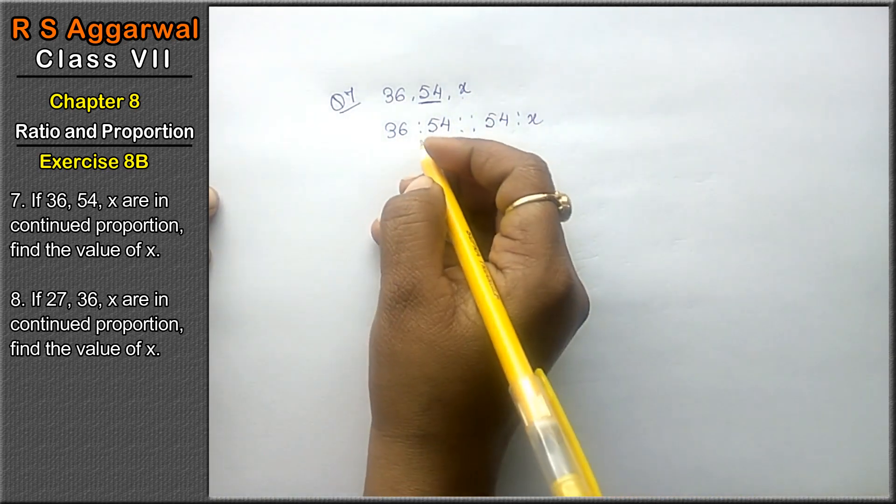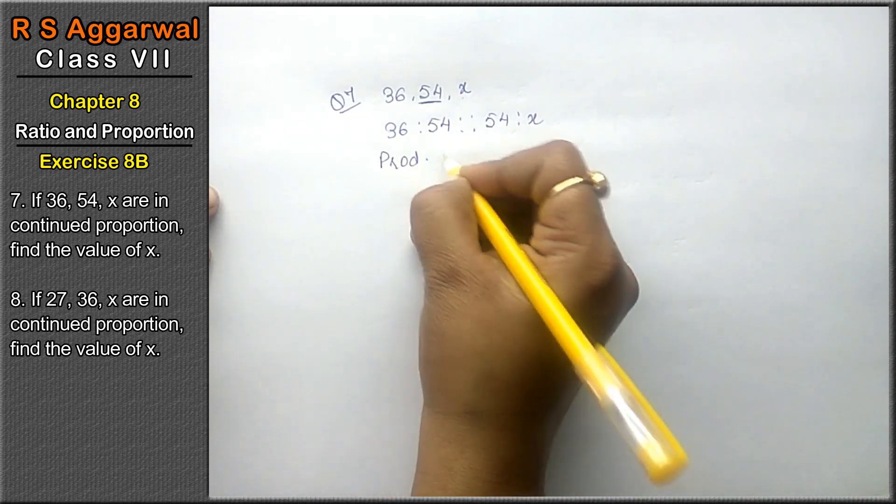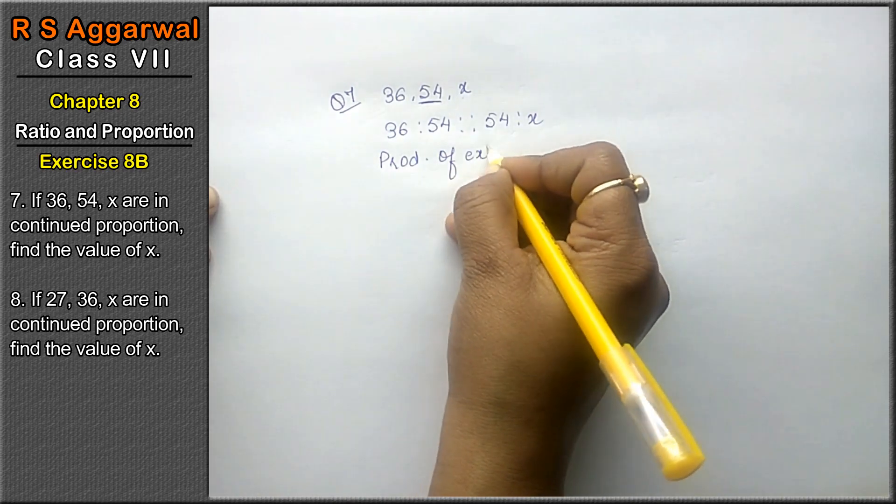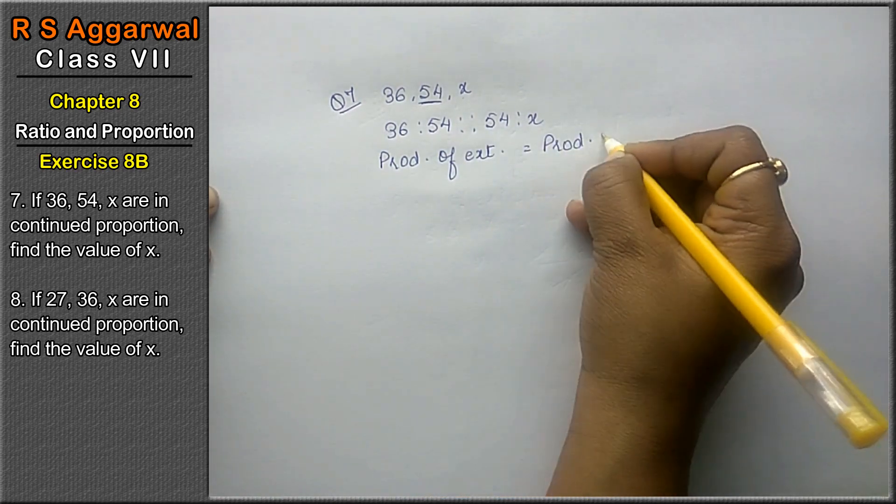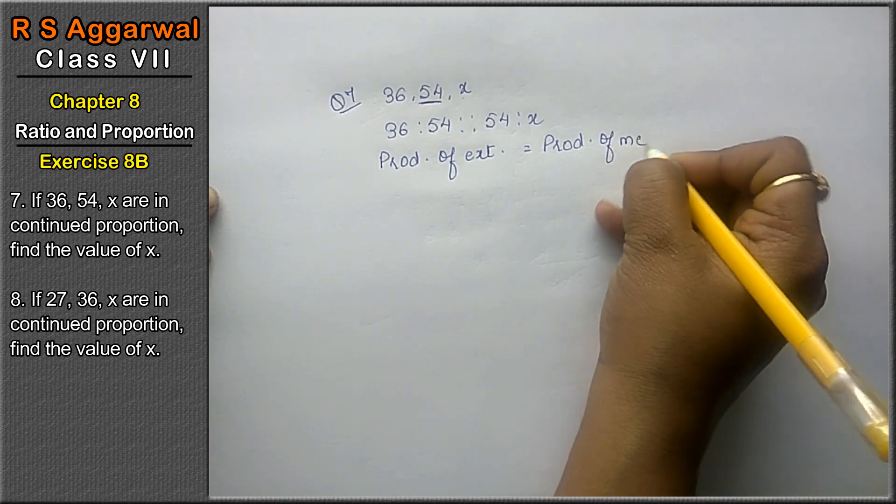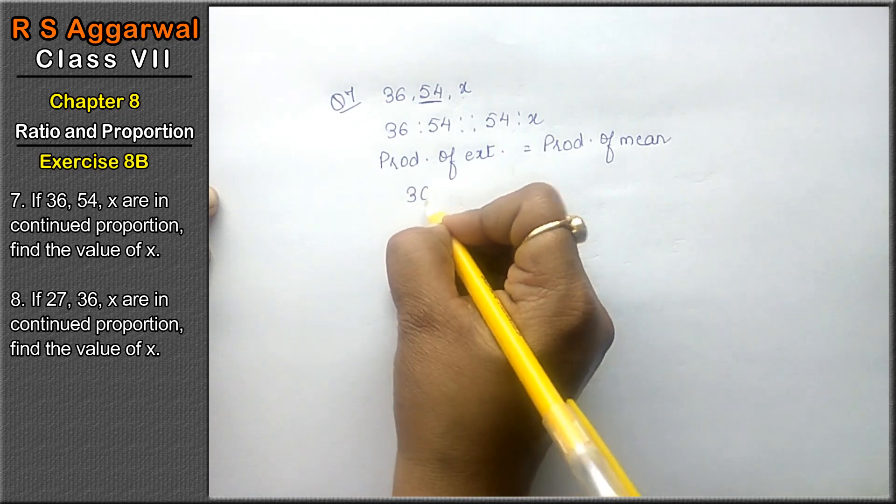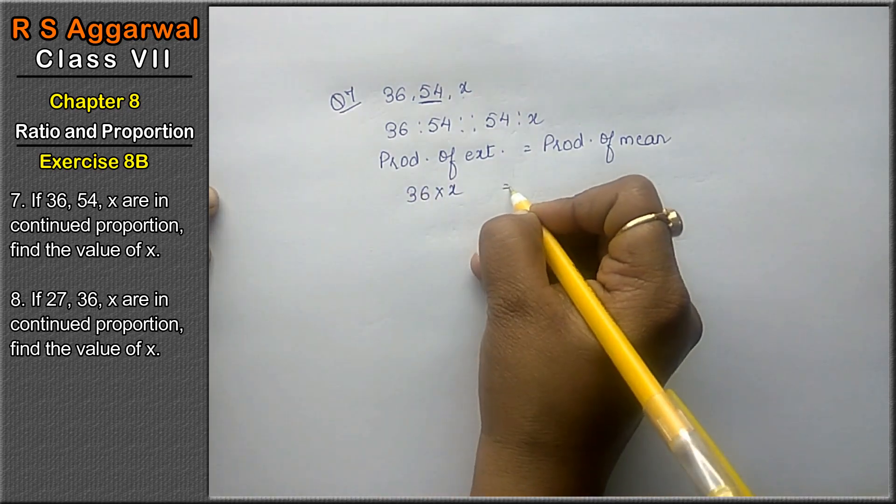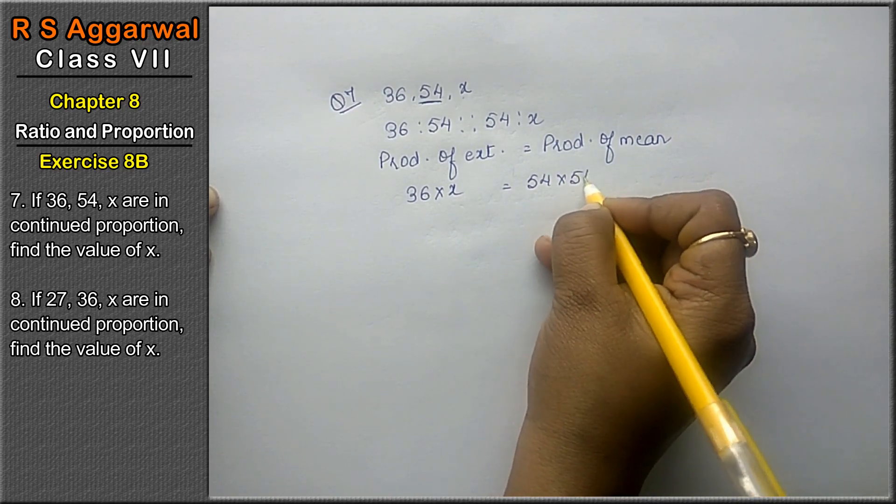Now we have to find the value of x. The product of extremes equals the product of means. Product of extremes: 36 into x. Product of means: 54 into 54.